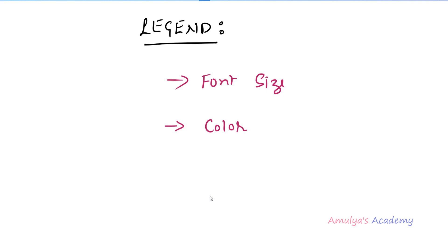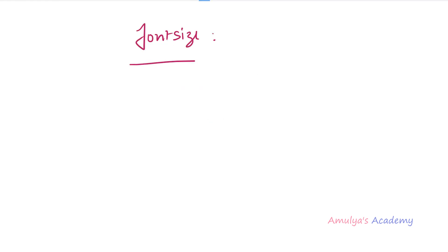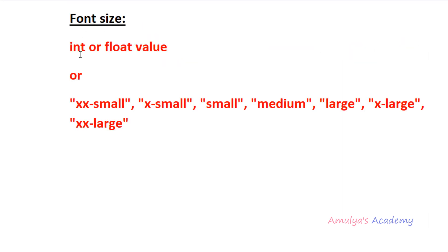First we will see how to change the font size of the legend. To change the font size of the legend we can use the fontsize keyword argument. While discussing about the legend function we discussed about its syntax — it can take zero or multiple number of arguments and keyword arguments. So here to change the font size we are using the keyword argument named fontsize. This keyword argument can take integer value, float value, or strings.